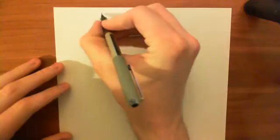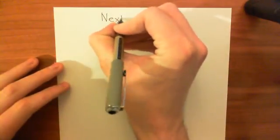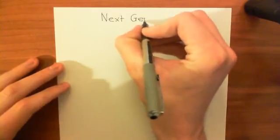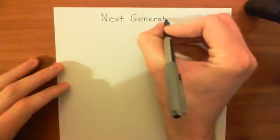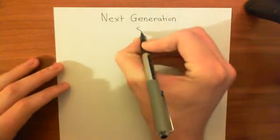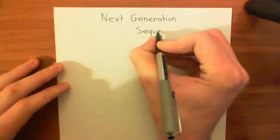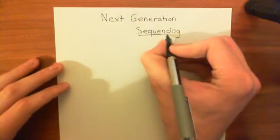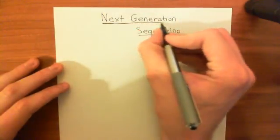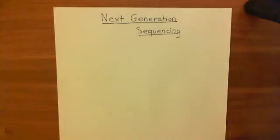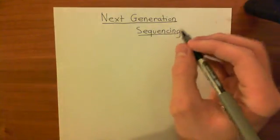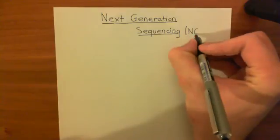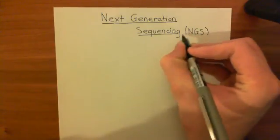So, how are we doing it? We are using a technique known as next-generation sequencing, and that's the topic for this video. Next-generation sequencing has replaced the need for Sanger sequencing. It's still a modified form of Sanger sequencing — not something totally different. We're still using fluorescently labelled terminator nucleotides, but there is a big difference. Next-generation sequencing is often abbreviated to NGS.